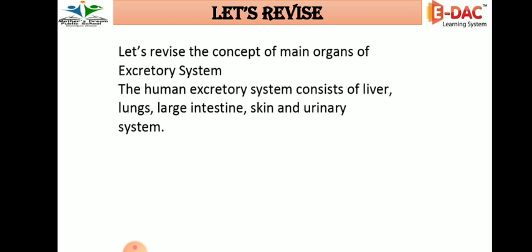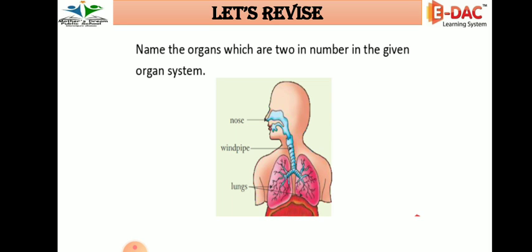Which are the main organs? Liver, lungs, large intestine, skin, and urinary system. So the human excretory system is made up of all of these together. Let's revise: liver, lungs, large intestine, skin, and urinary system. Right?